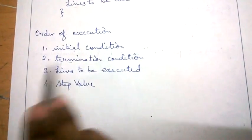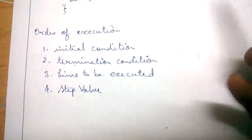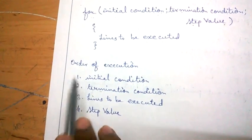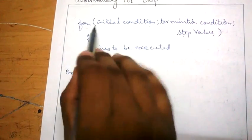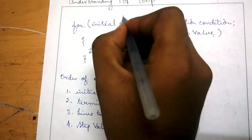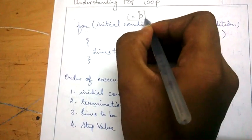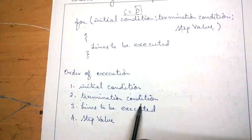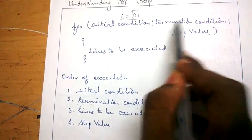This is the order of execution — the order with which this loop is going to proceed. First is the initial condition. The loop starts by processing the initial condition. For example, if you put i equal to zero, that is your initial value. The second is the termination condition. After executing the initial condition, the program goes to the termination condition.